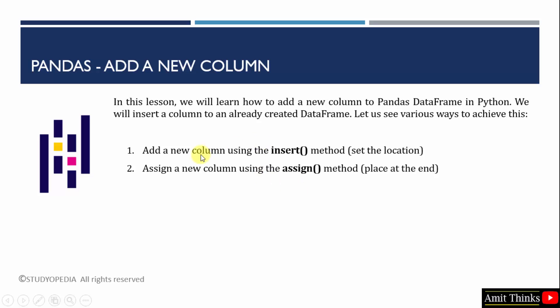We will add a new column using the insert method. This will allow you to add the column data, the column name, as well as the location of the column — that is where you want to place the new column. In the second example, we will assign a new column using the assign method, but the new column will get automatically added to the end.